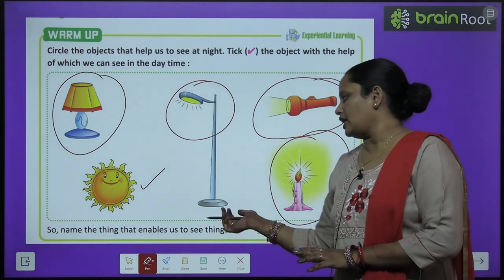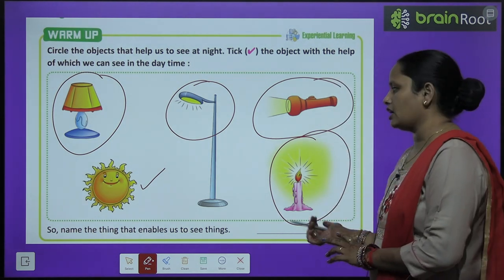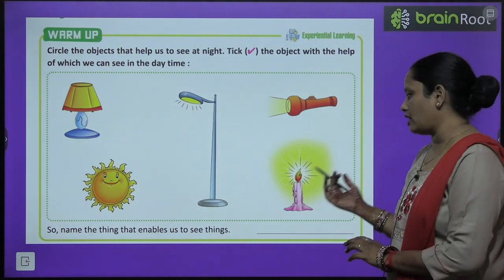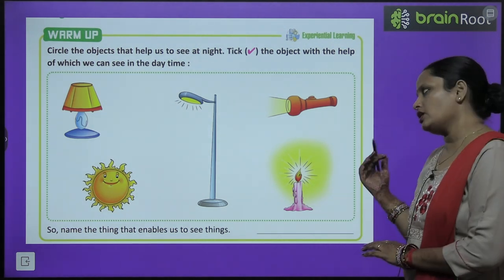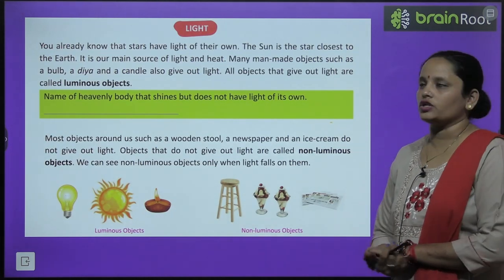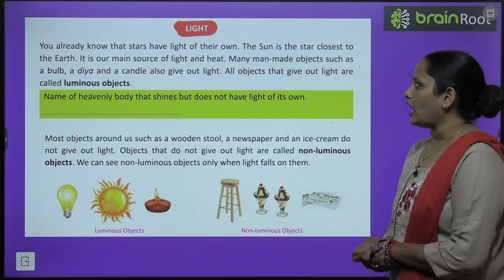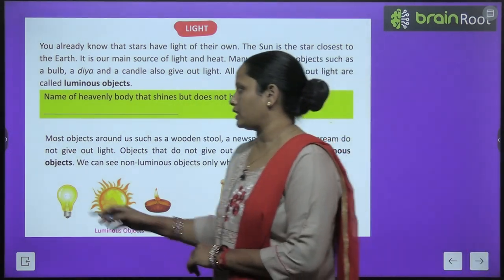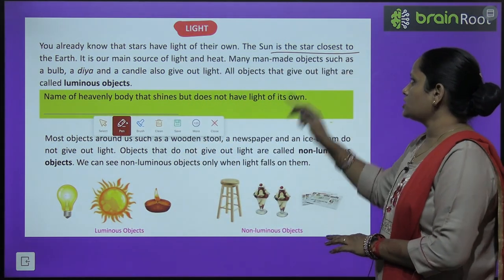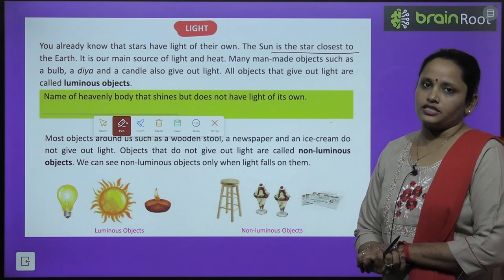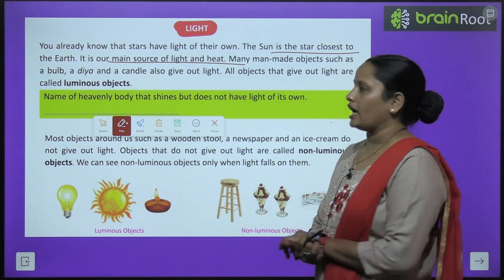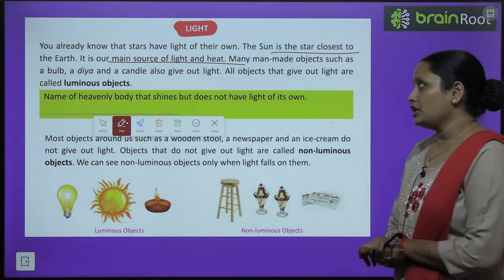Name the things that enable us to see things. Aise cheez ka naam dijiye jo hamein dekhne mein help karti hai. In sab se hamein light mil rahi hai, toh light hamein cheezon ko dekhne mein help karti hai. The new topic we are going to learn is light. You already know that stars have light of their own. The sun is the star closest to the earth.